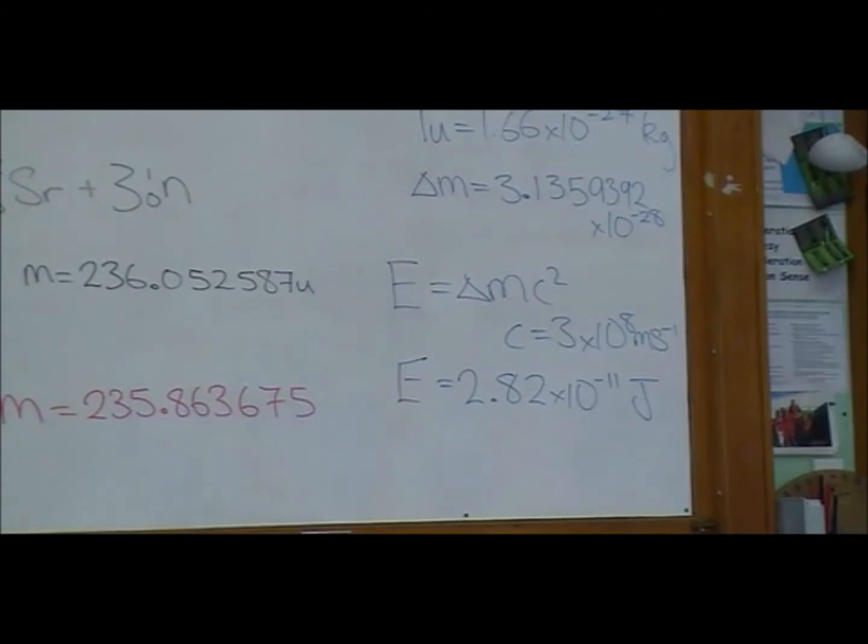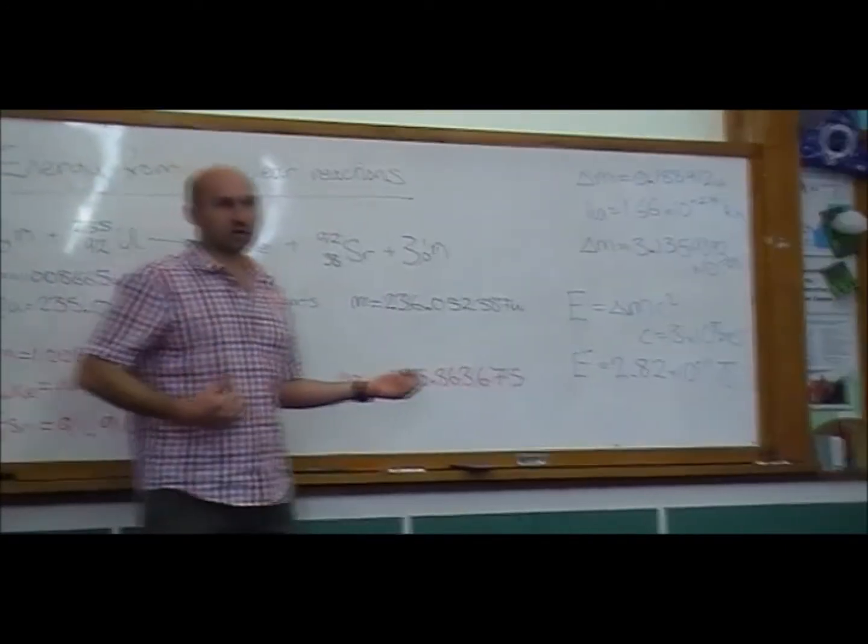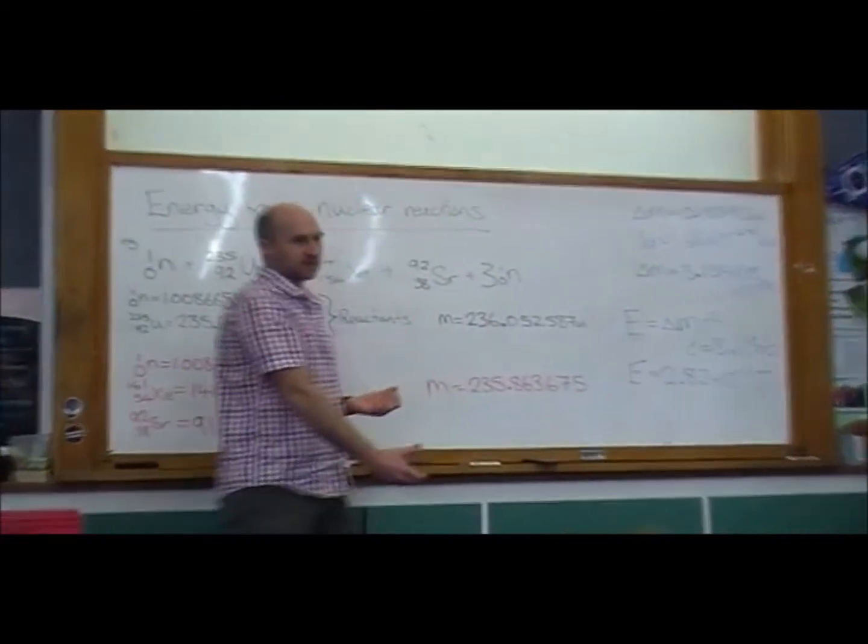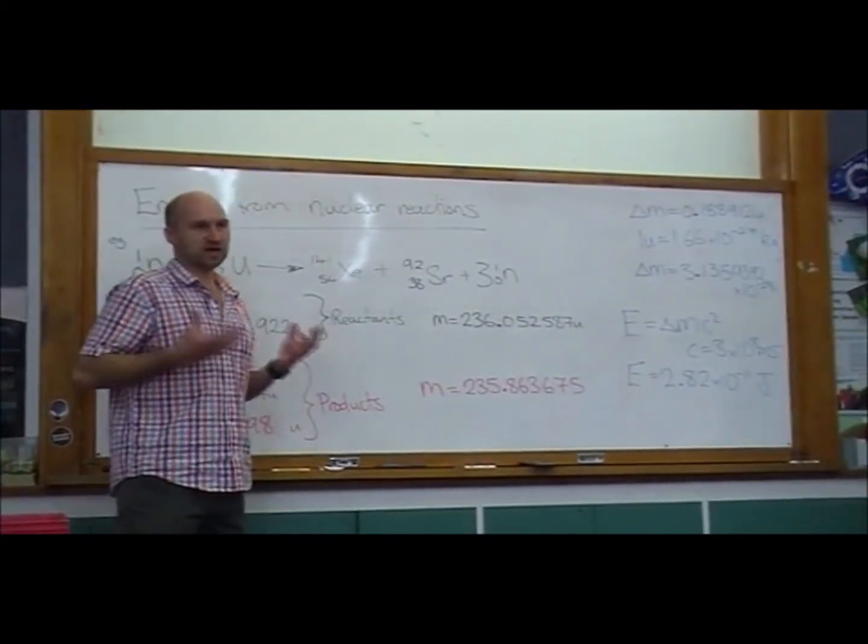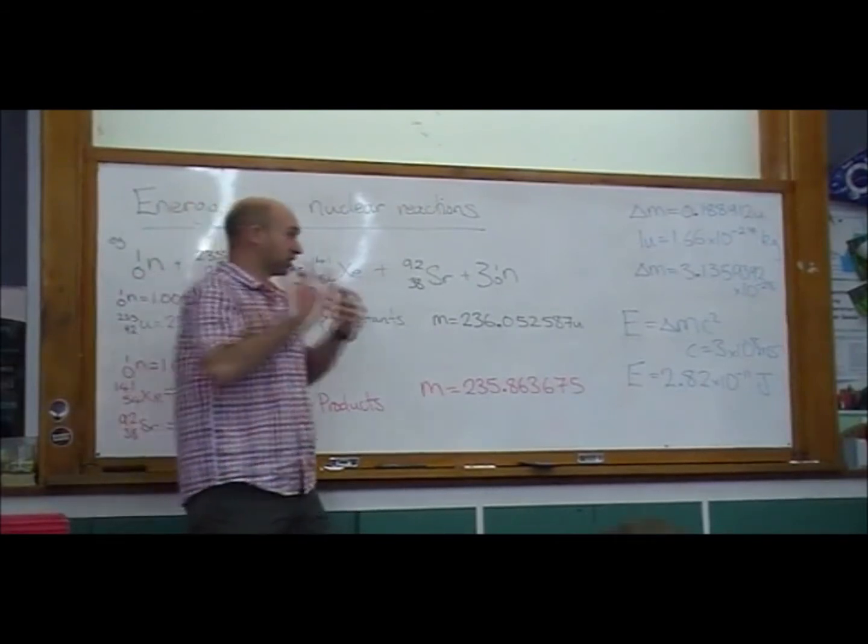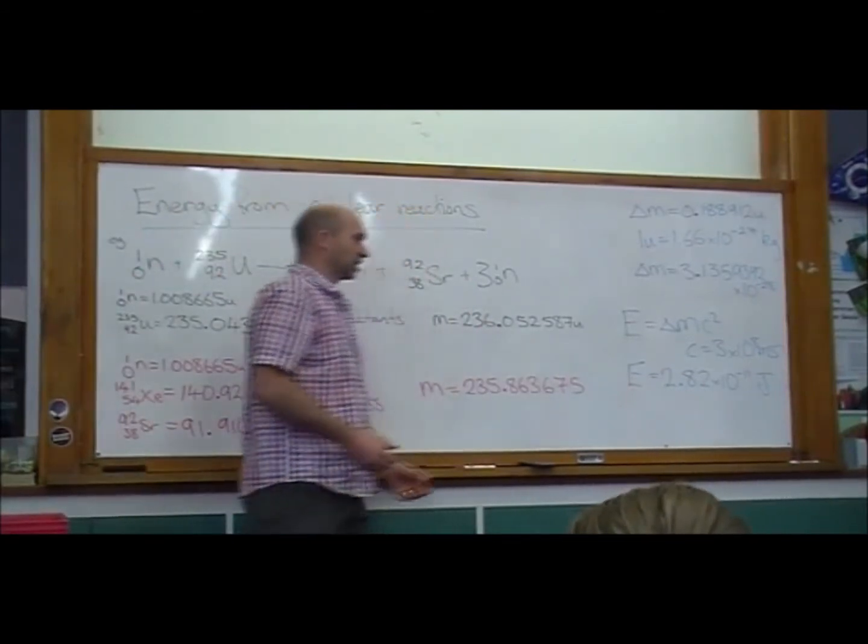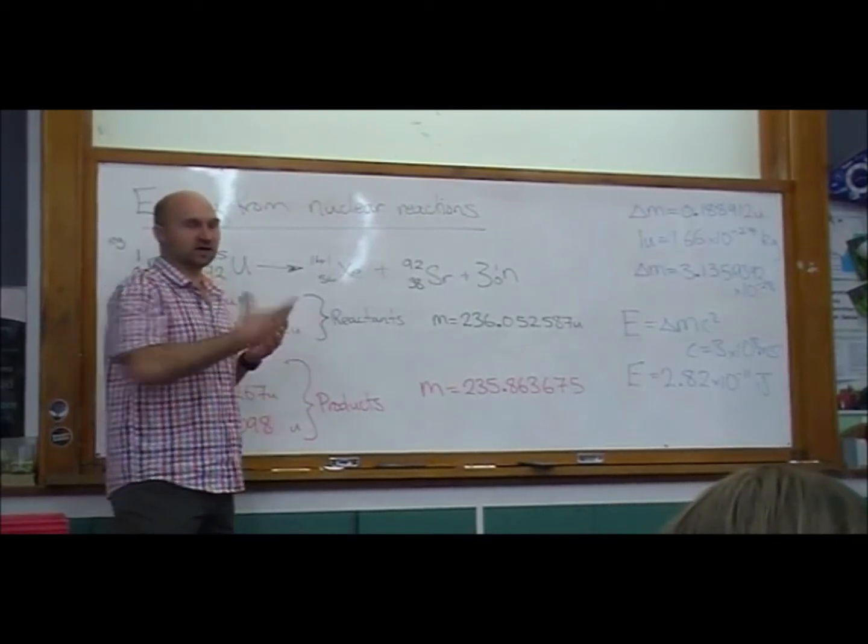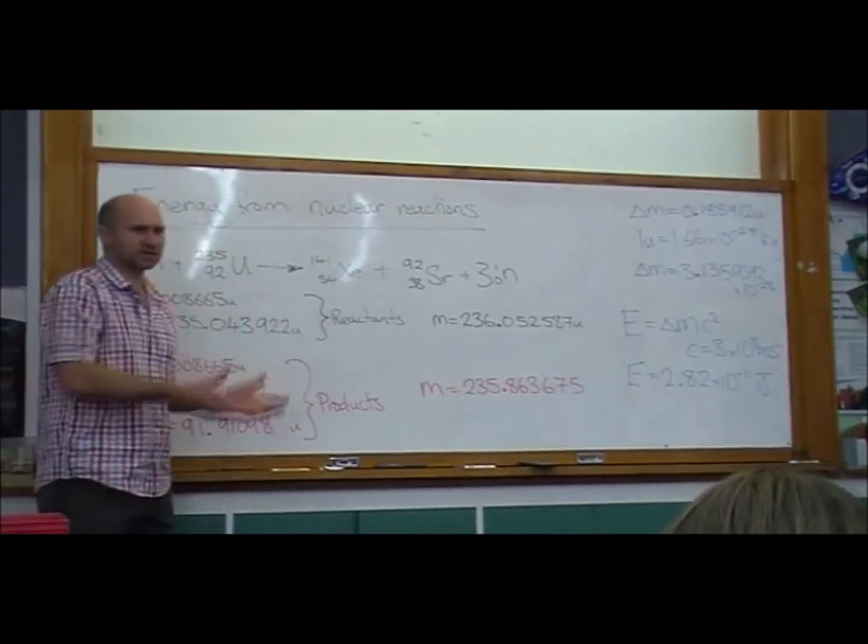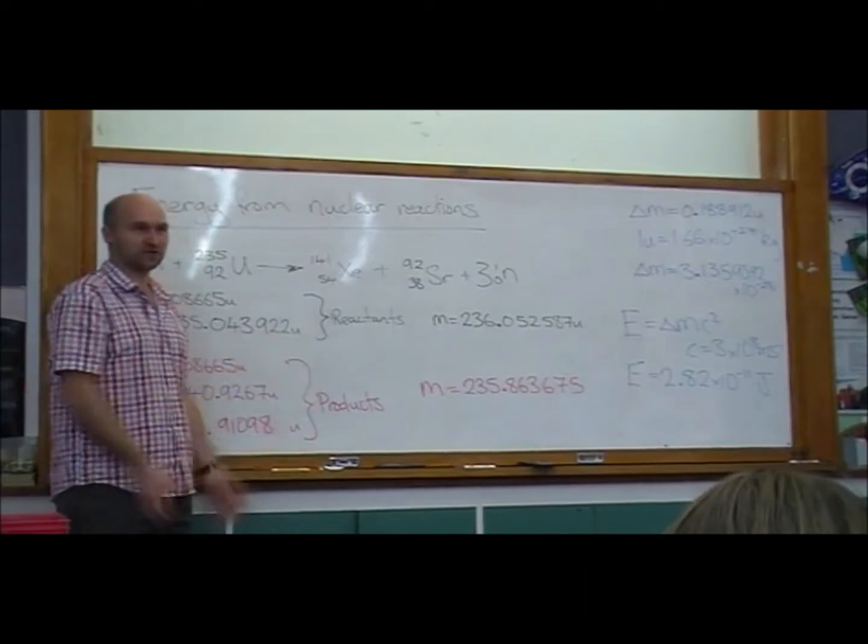So that's a pretty small number. What we're going to have a go at now is knowing that that's how much energy we get from one uranium fissioning. We're going to work out how many uraniums we need per second to fission to run a one gigawatt power plant, and then we can work out how much uranium do we need to put into this power plant to run it for a year.